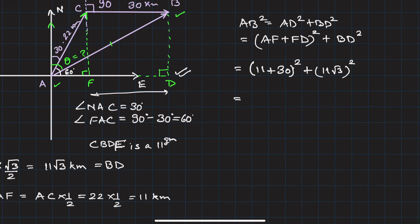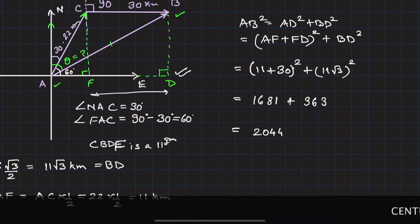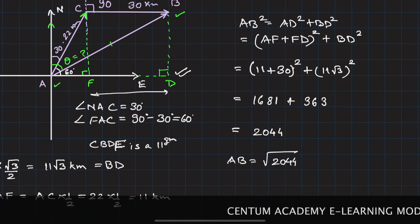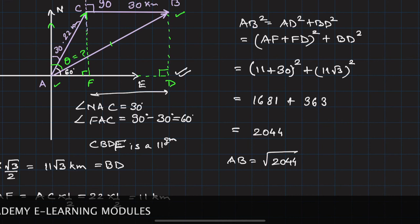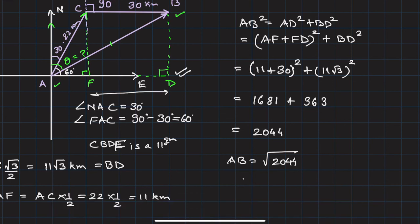41² = 1681, and (11√3)² = 121 × 3 = 363. Adding these: 1681 + 363 = 2044. So AB = √2044 ≈ 45.21 kilometers. That is the distance of point B from A.